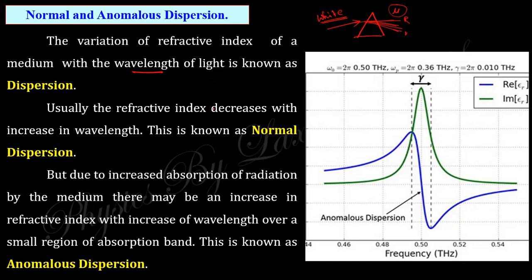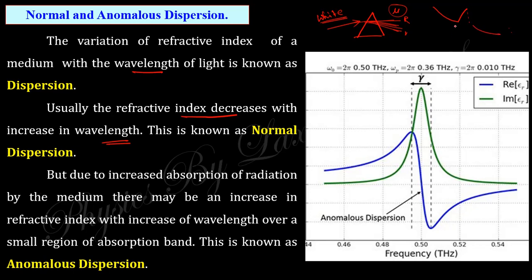There are mainly two types of dispersion: normal and anomalous. In normal dispersion, the refractive index decreases with increasing wavelength. If you plot refractive index against wavelength, the curve decreases as wavelength increases. In anomalous dispersion, the behavior is opposite and occurs over a very small region, giving a different curve shape.